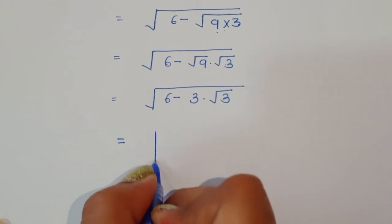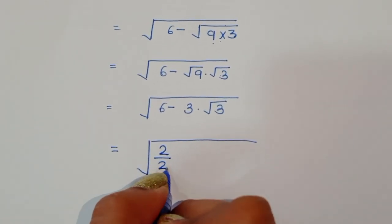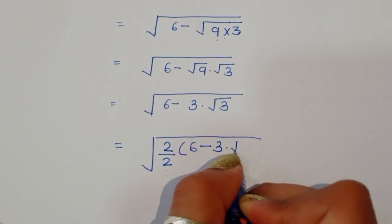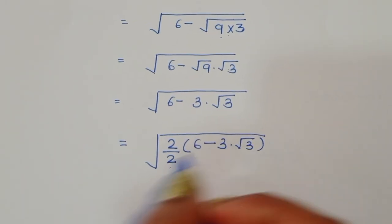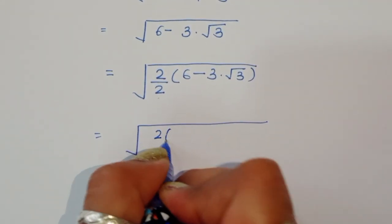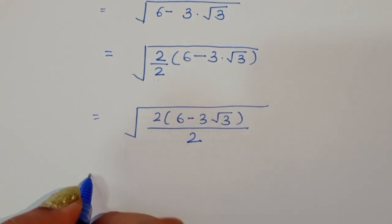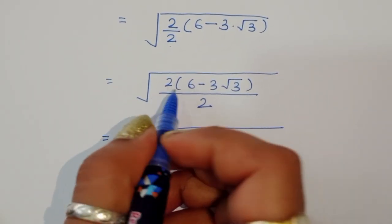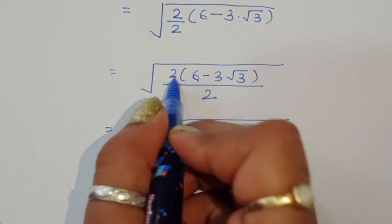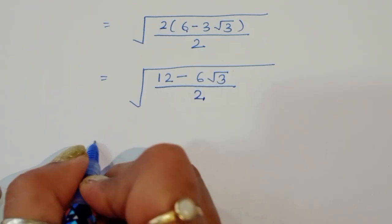Now we have to multiply and divide by 2 here. So if we multiply and divide by 2, we get: 2 times (6 minus 3 square root of 3) divided by 2, which equals 12 minus 6 square root of 3, all divided by 2.